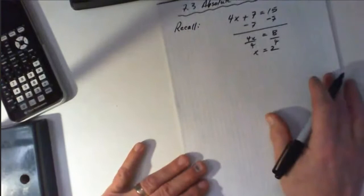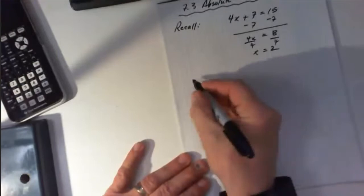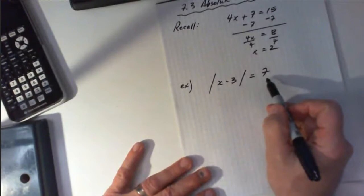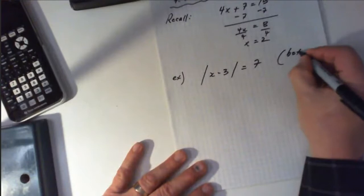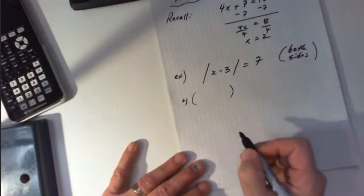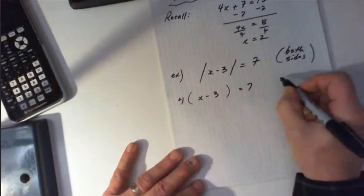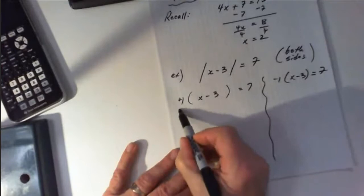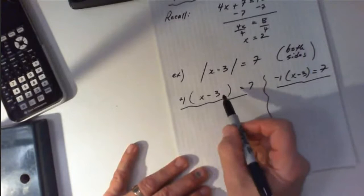Now, an absolute value equation has basically the same steps, except what we're going to do here is start off with an absolute value equation that would look something like this. What we have here is the absolute value of x minus 3 is equal to 7. The simplest way to solve this is we look at it from both sides — the positive side and the negative side.